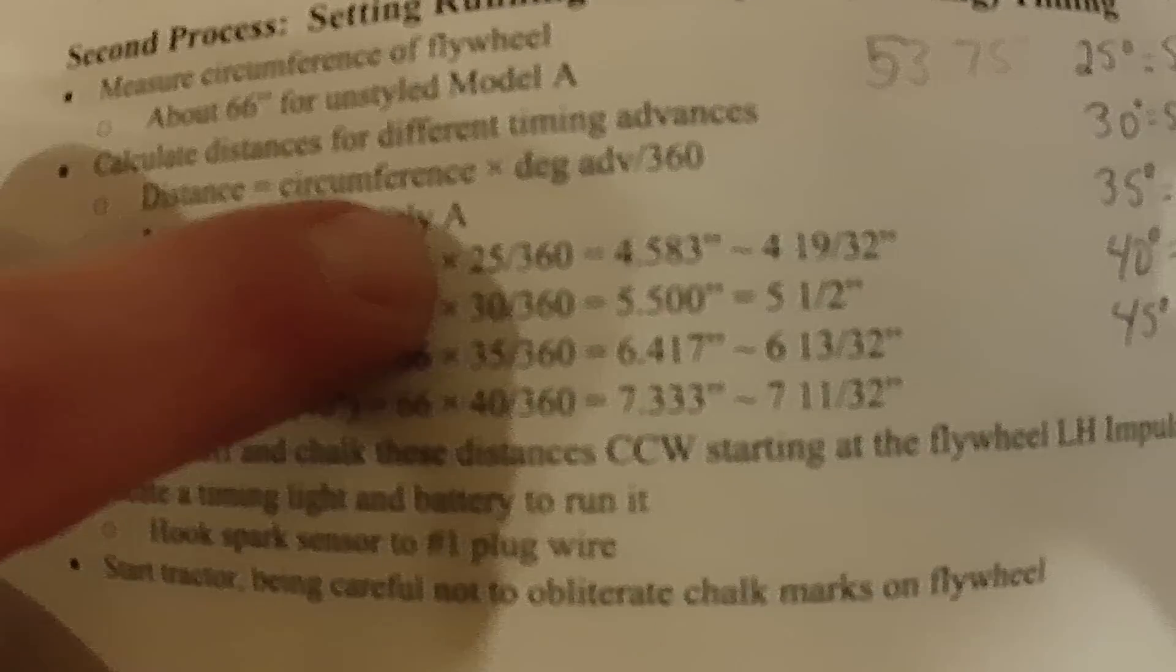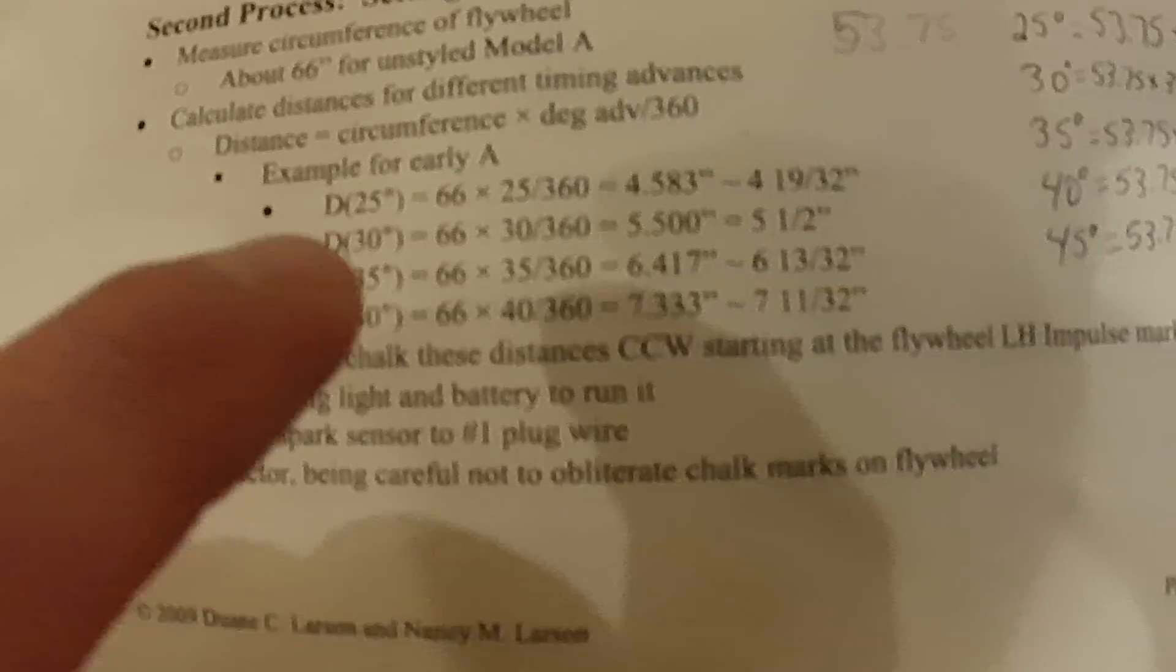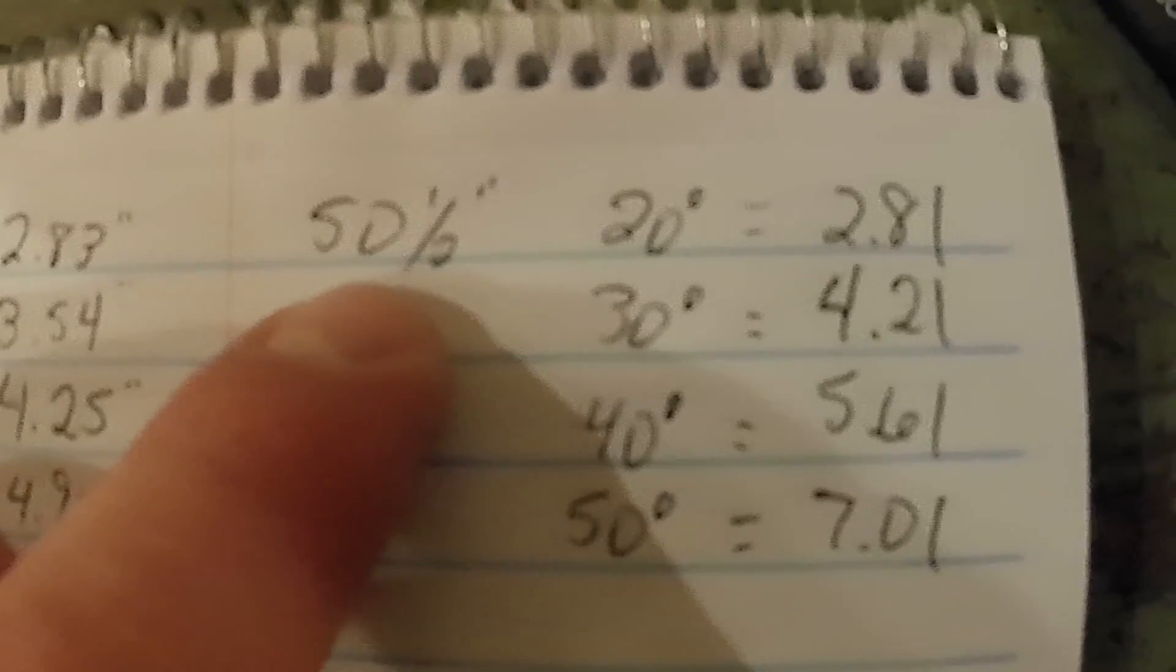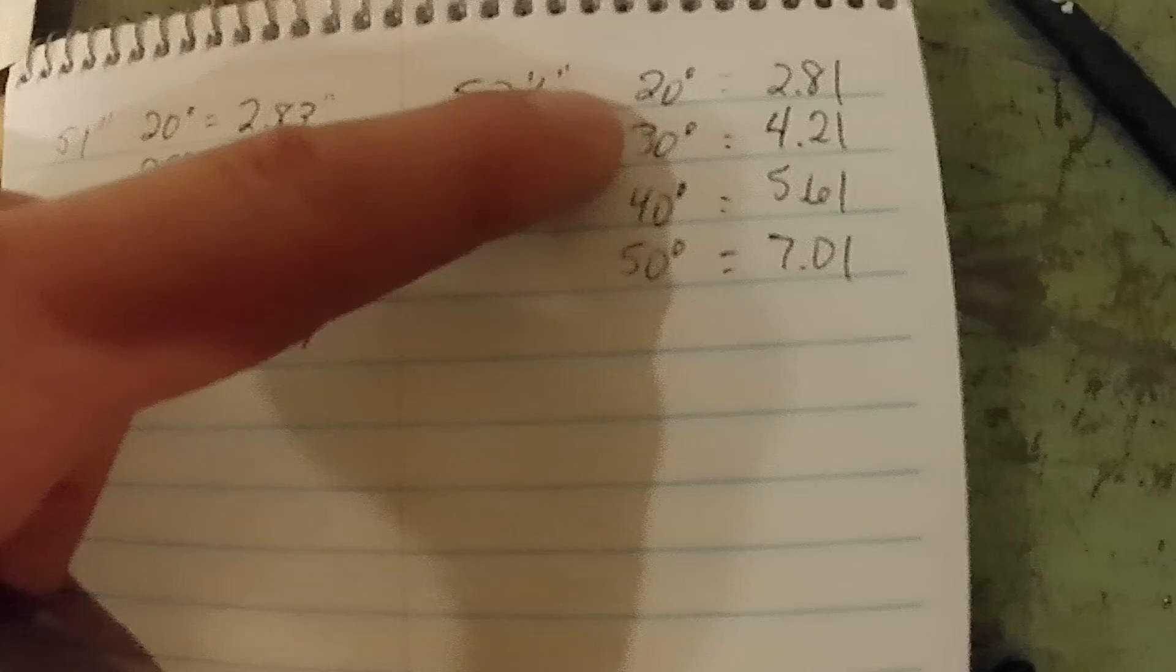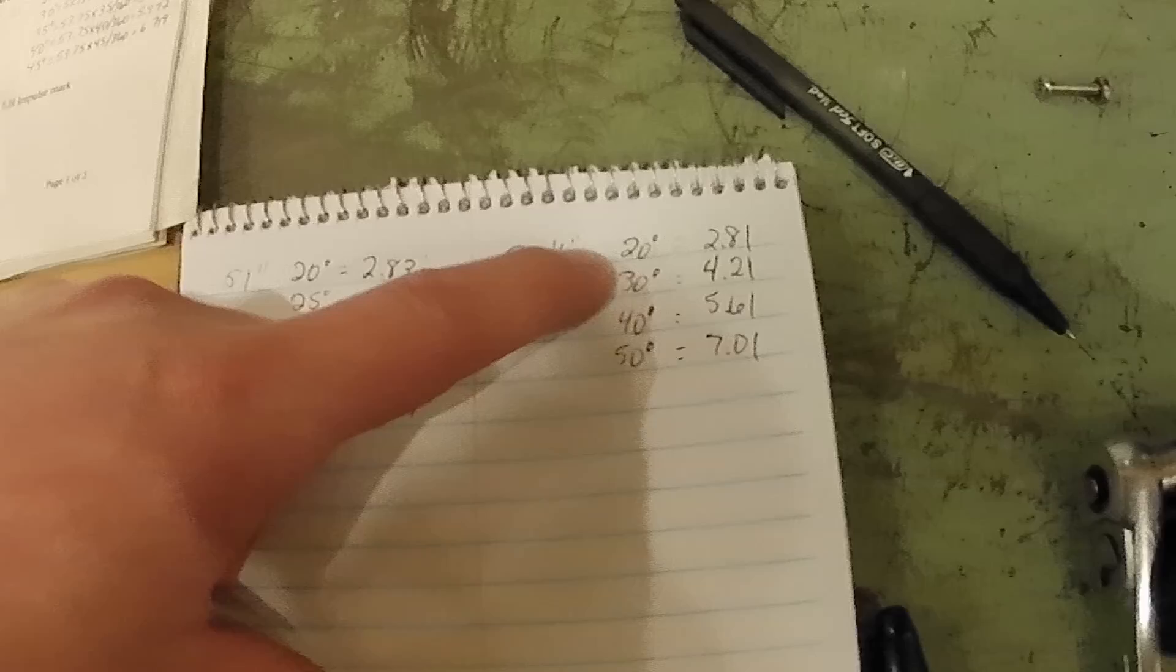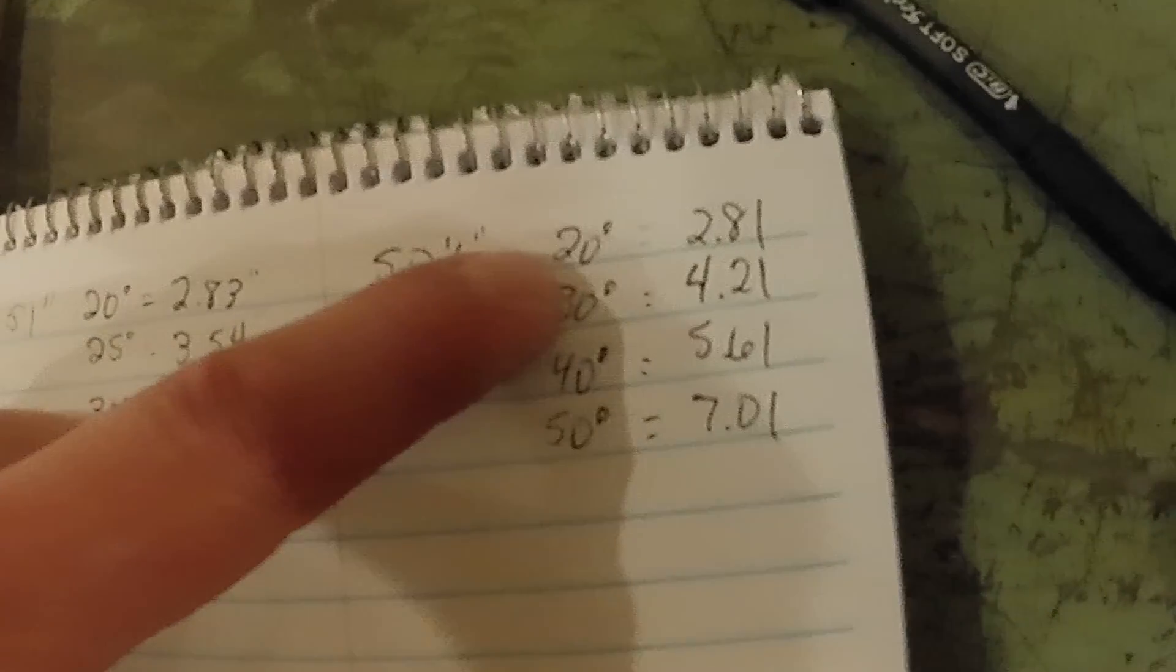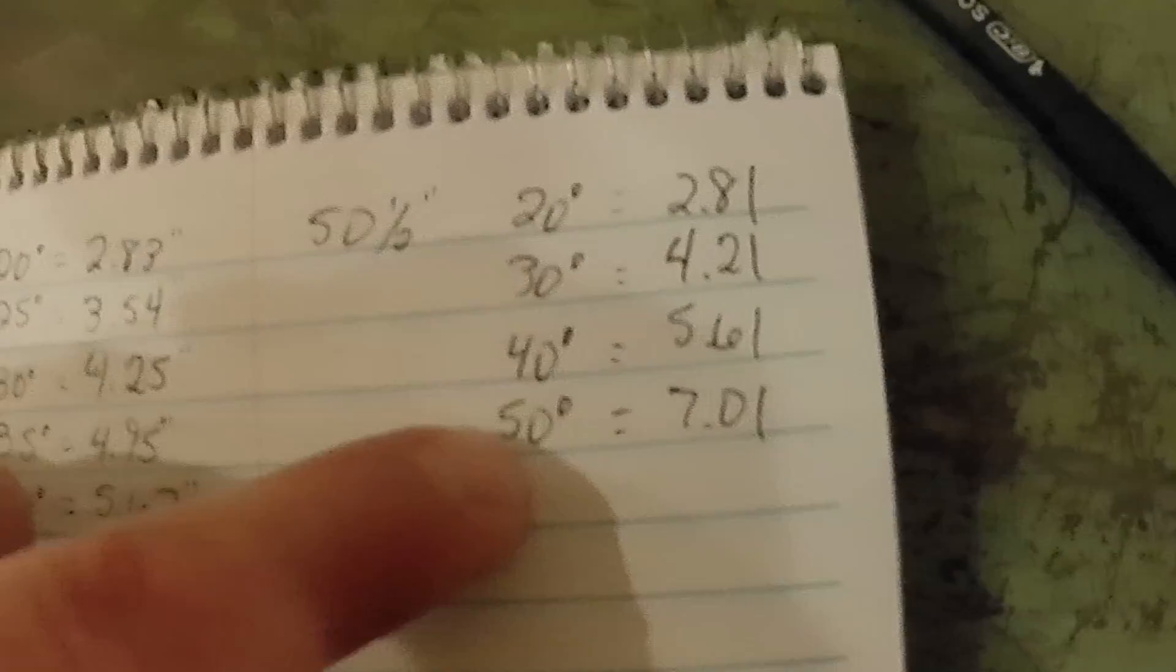When you break this down, for every degree mark it's just that times that degree divided by 360. It's actually really simple once you do it a time or two. For my tractor, when I took my string around it, it's 50 and a half. The tractor was running but it was running a little rough, so I figured that the timing probably wasn't out too far. Generally speaking, the timing at about 25 to 30 degrees is where these tractors run the best. I figured I probably wasn't too far from 25 or 30 degrees, so I wanted marks at sort of the extremes. 20 degrees would have been sort of extreme on one end, and 50 degrees would have been extreme on the other.